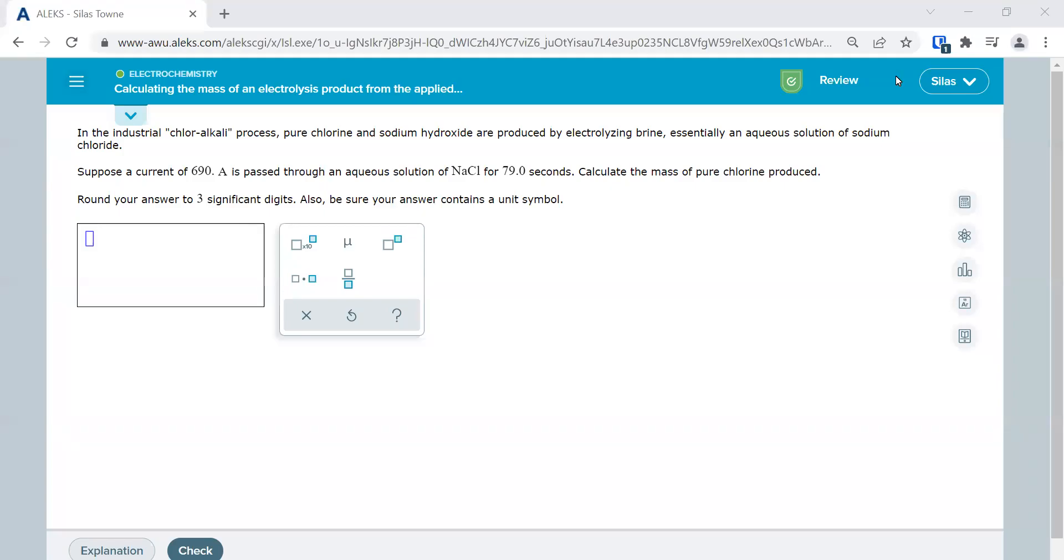Okay. In this problem, we're going to look at the mass of an electrolysis product. Now this could be coating something with silver or with copper, purposely plating something.